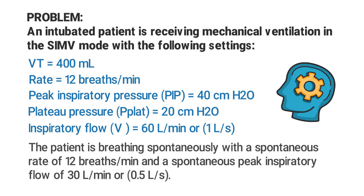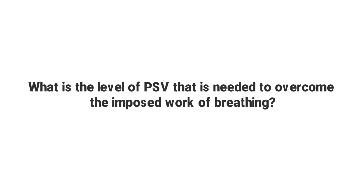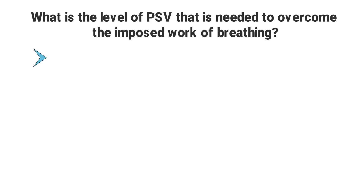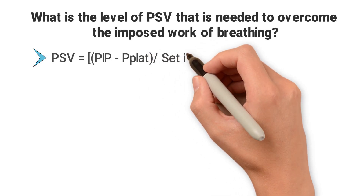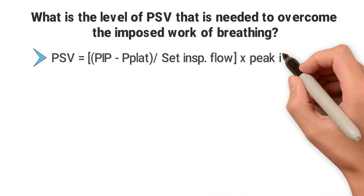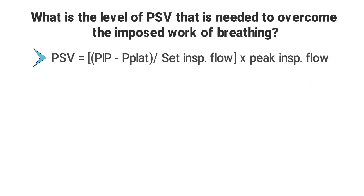Taking all of this information into account, what is the level of pressure support needed to overcome the imposed work of breathing? All you need to know is the formula for pressure support. Pressure support equals the peak inspiratory pressure minus the plateau pressure, divided by the set inspiratory flow, then multiplied by the spontaneous peak inspiratory flow. If you know this formula, all you have to do is plug the numbers in.